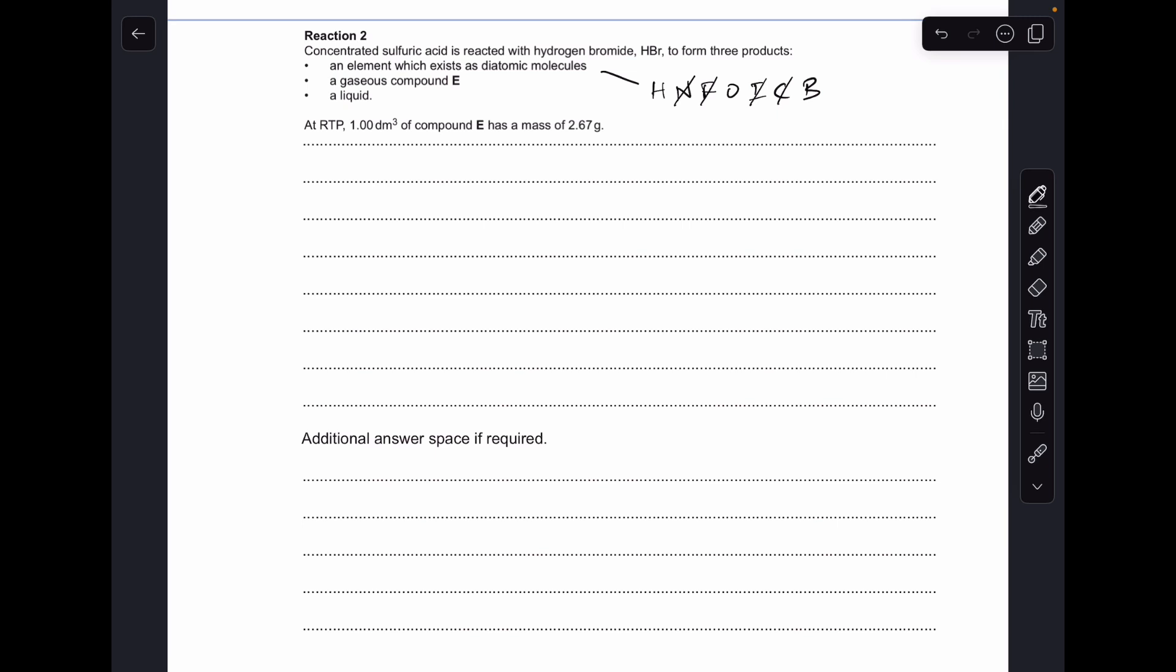At RTP, one dm cubed of E has a mass of 2.67 grams. So because we're at RTP, if we multiply by 24, we're going to find out what the mass of 24 decimeters cubed is, in other words a mole, and it's 64.1, so E must be SO2.